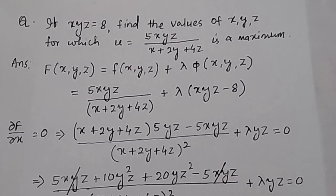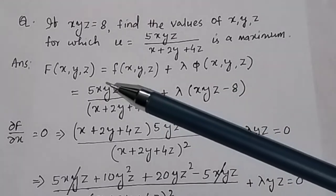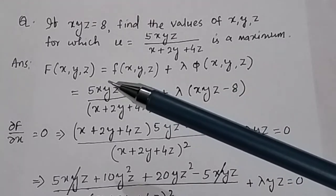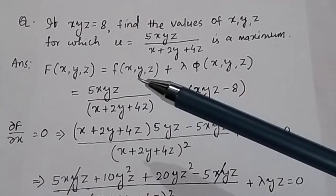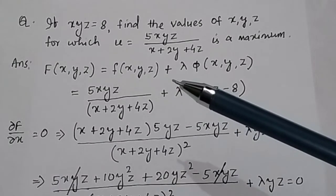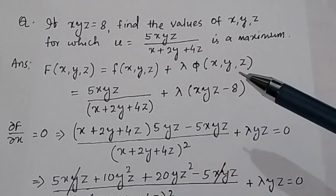We will solve this problem by using constrained maximization, i.e., maxima or minima using the Lagrange multiplier. For the Lagrange multiplier, we know any function F(x,y,z) equals the function f(x,y,z) plus lambda times phi(x,y,z).